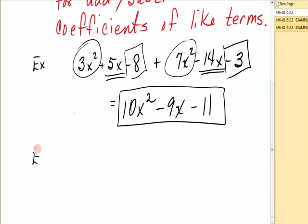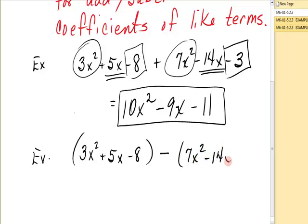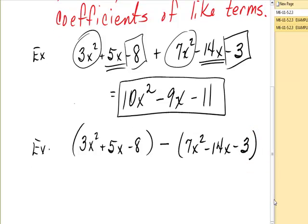Now when I have subtraction, let's take the same polynomials: 3x² + 5x - 8 and subtract 7x² - 14x - 3. Back when you worked with integers, positives and negatives for the first time, you might remember that subtraction was defined to be adding the opposite of the second number.